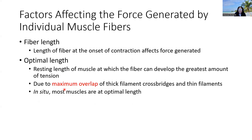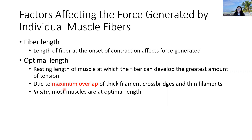That was our second factor: frequency and diameter. The third factor is fiber length — the length of the fiber at the onset of contraction. When we think about the sarcomere, it generally generates the most force when it is at its optimal length — the resting length at which the fiber can contract the most and generate the highest amount of tension. The reason is that there is maximum overlap between the thick and thin filaments, allowing more crossbridge cycling and more force.